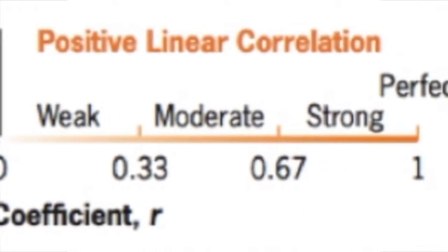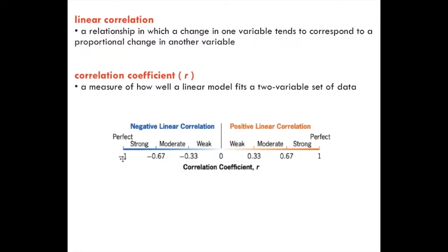We use this correlation coefficient r. If r is negative, we have a negative linear correlation, but we look at a scale between zero and negative one and zero to one to measure how strong that correlation is. If you've got anywhere between negative 0.67 and negative one, you've got a strong negative, and between 0.67 and one is a strong positive linear correlation.